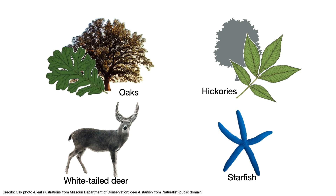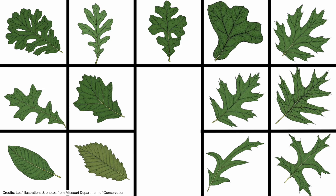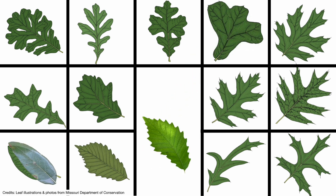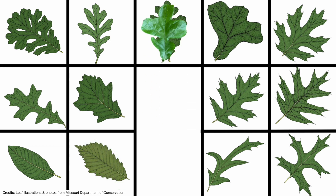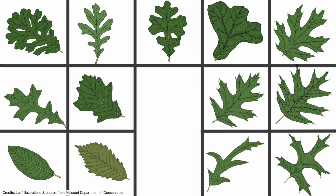Speaking of which, biologists may be clearing their throats in response to our illustration listing oaks or hickories or starfish as examples of species. For example, oaks are actually a genus composed of a diversity of species — here are some that occur in the Ozarks. Many individual trees can be easily identified to the species level, but in other cases there can be some ambiguity. This is in part because a number of oaks can hybridize, meaning that different species can interbreed, and thus the boundaries separating species aren't as black and white.